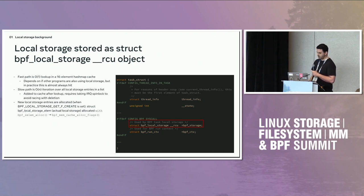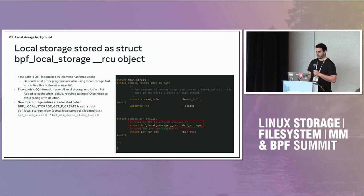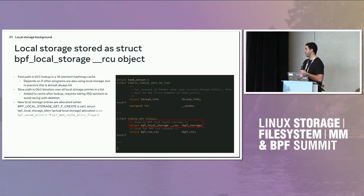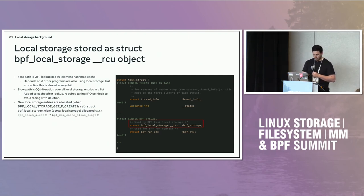In terms of how it's implemented — the gist is that in the task struct and cgroup struct we have a BPF local storage object. In that object we have a hash map where we cache the local storage entries for that task. Otherwise we have a list where we store all of them if not in the cache. The idea is that if you have, say, a thousand local storage entries across different maps, you'd have a cache so you didn't have to do an O(N) lookup every time.